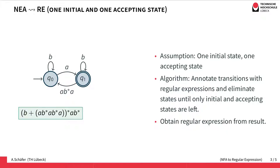The idea here is that we assume we only have one initial state and one accepting state, and we successively eliminate all states that are neither the initial nor the accepting state until we end up with just those two, and then we obtain the regular expression from the result directly.